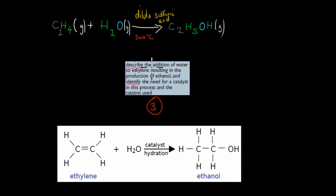On the reverse, describe the addition of water to ethylene, resulting in the production of ethanol, and identify the need for a catalyst in this process and the catalyst used. In this case, we've got ethylene. We add water to it. Our catalyst is dilute sulfuric acid, and we also have moderate temperatures of 300 degrees Celsius, and we produce ethanol. We have ethylene, we will add this water molecule into structure. The catalyst is dilute sulfuric acid, not concentrated. The need for that catalyst is because otherwise the reaction wouldn't go ahead.